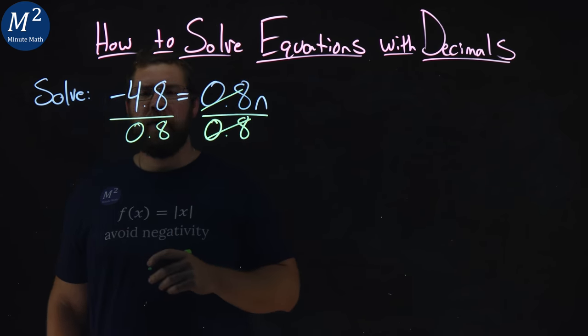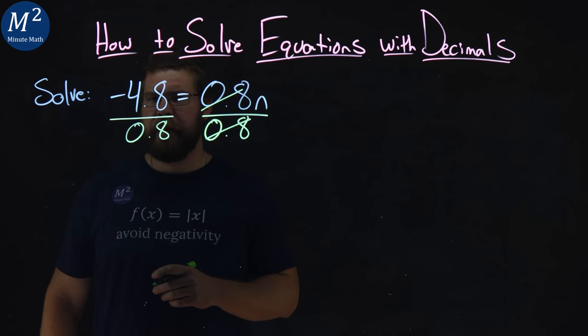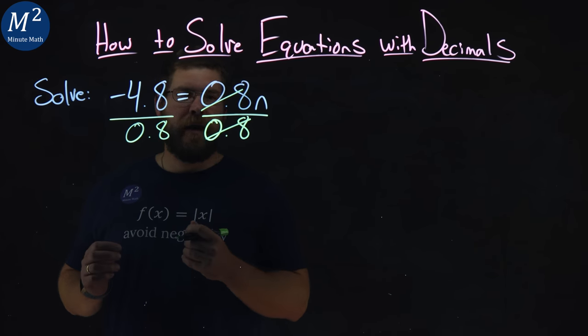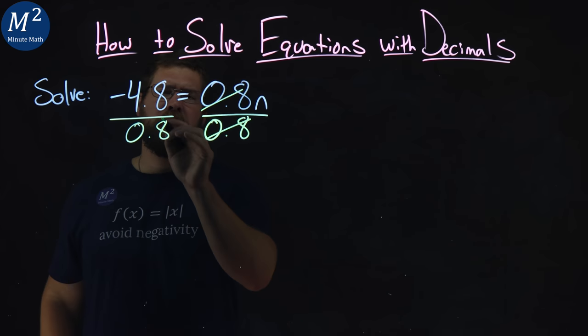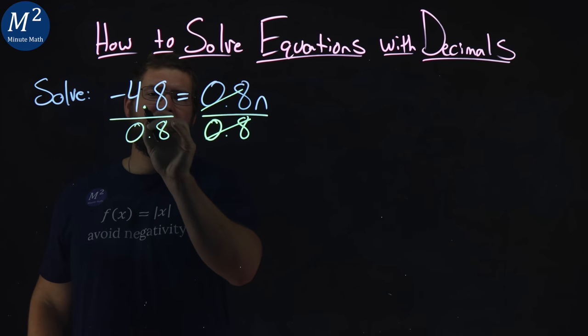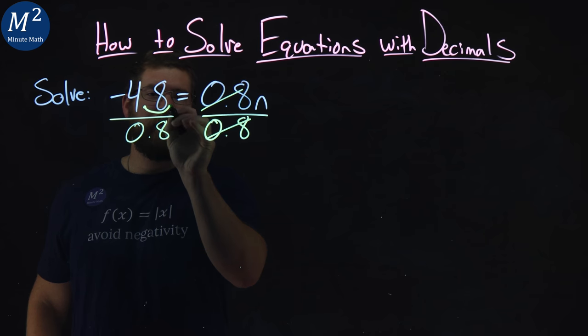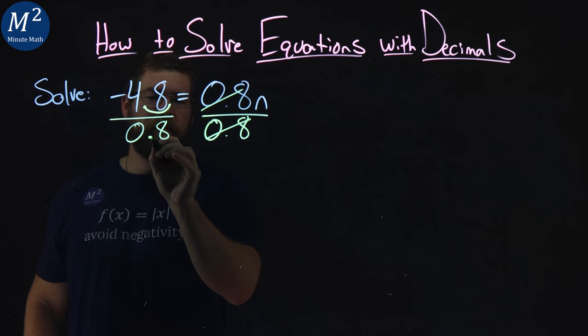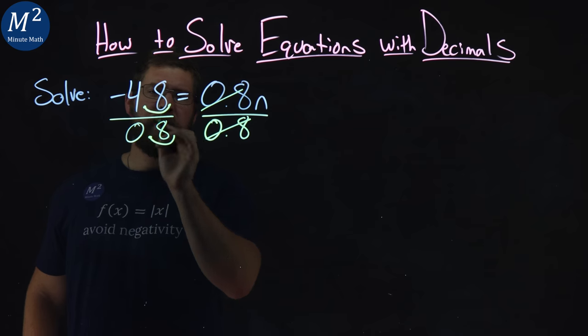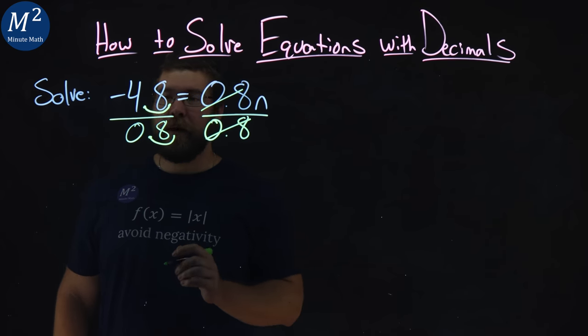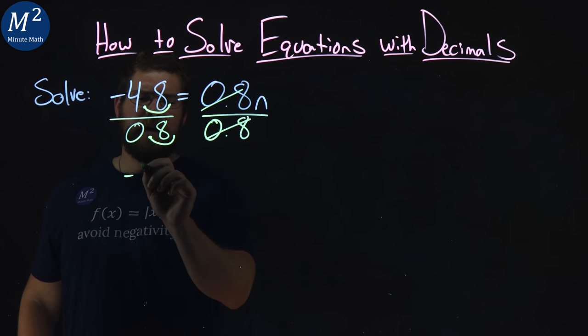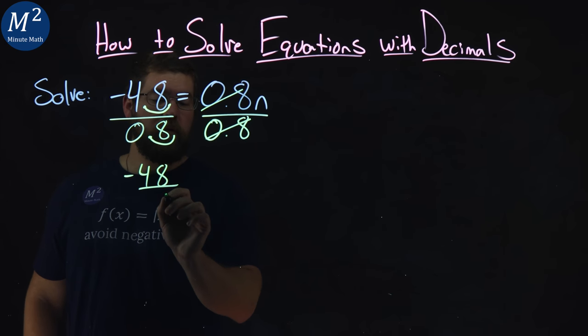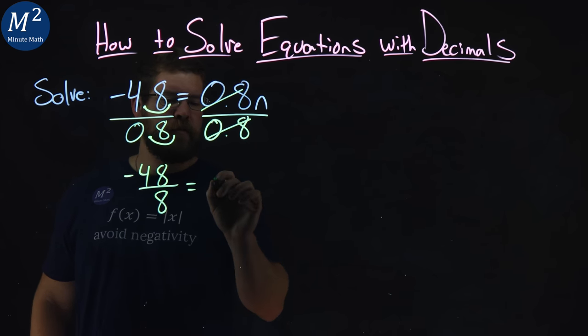But now I have negative 4.8 over 0.8, and I don't really like dealing with decimals if I can avoid it. One of the rules of division here states that negative 4.8, if we move that decimal place over to the right one, we also have to do that to the denominator. And so, negative 4.8 over 0.8 has the same answer as negative 48 over 8, and that's equal to n.